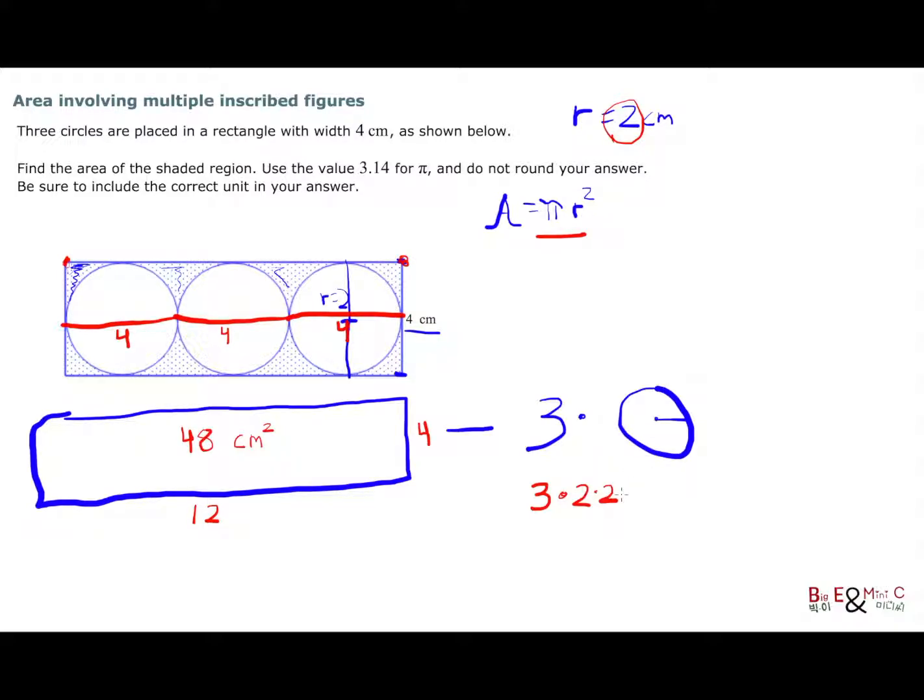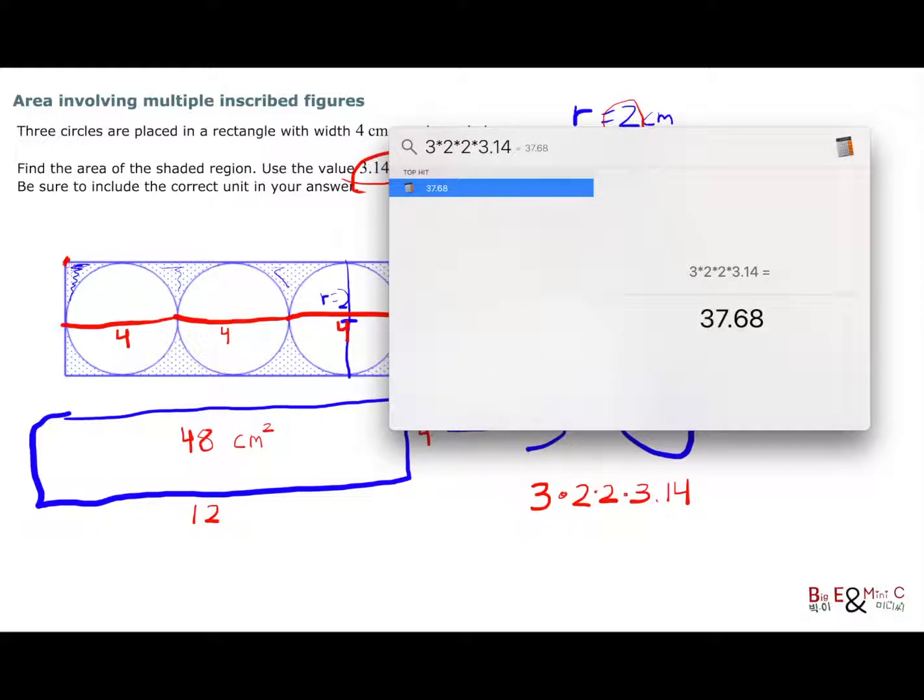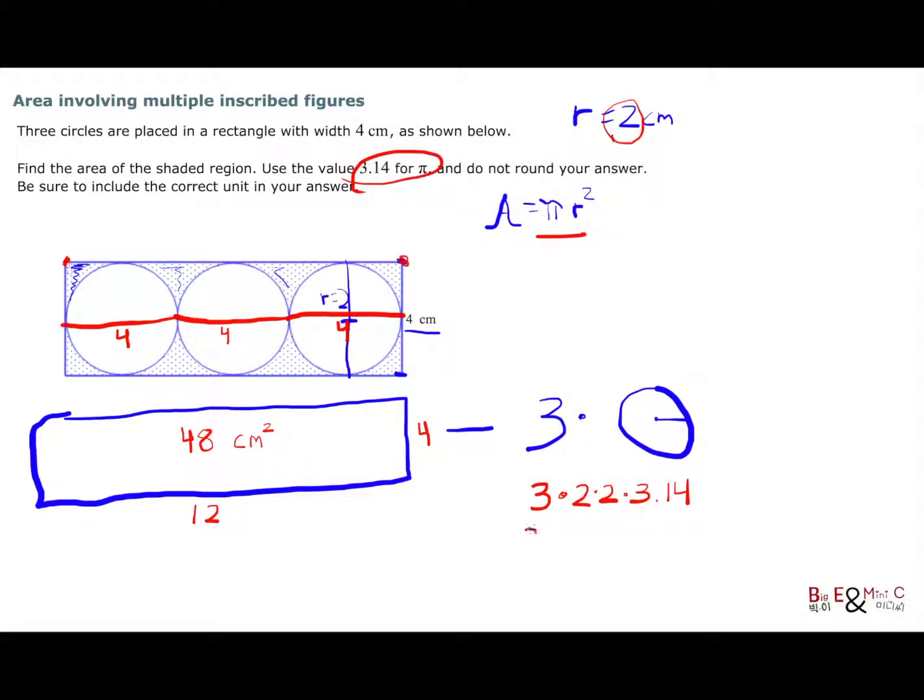And so two times itself, two times two. And then I'm going to multiply that by pi. And the problem does say we don't need exact right now. We need a 3.14 approximation. We'll multiply that by 3.14. So I'm going to bring my calculator up, and we're going to take three, because it's three circles, times two squared, two times two times 3.14. And I get 37.68. So I get 37.68, and that is also centimeters squared.